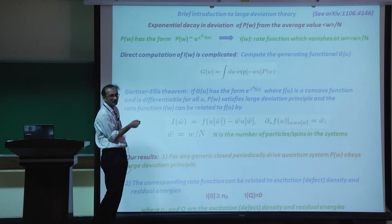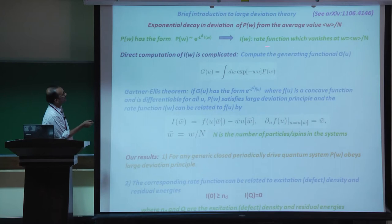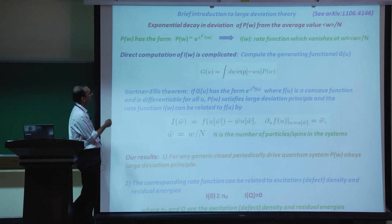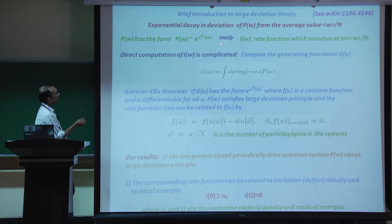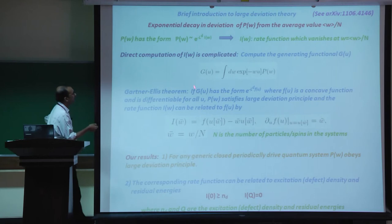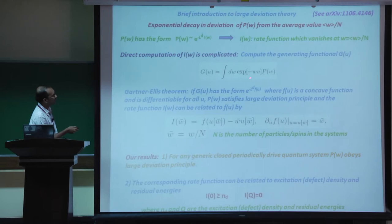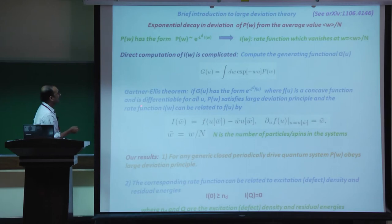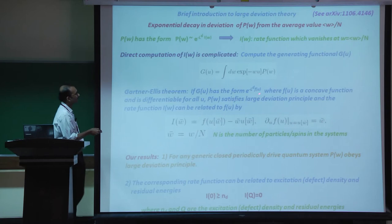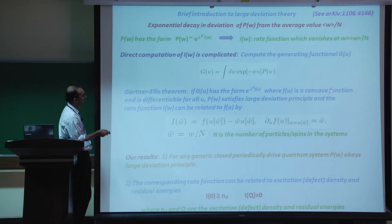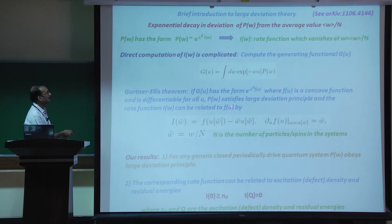Direct computation of the rate function I(w) is complicated because P(w) has delta functions and needs careful regularization. It is much easier to compute its generating function G(u), which is the Laplace transform of P(w). By the Gärtner-Ellis theorem: if G(u) has the form exp(-L^d * F(u)) where F(u) is a concave differentiable function, then P(w) satisfies the large deviation principle, and the rate function I(w) is related to F by a Legendre transform.